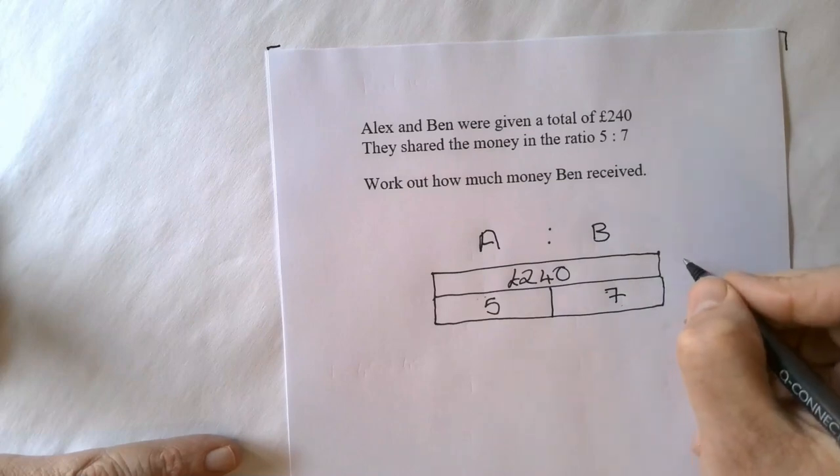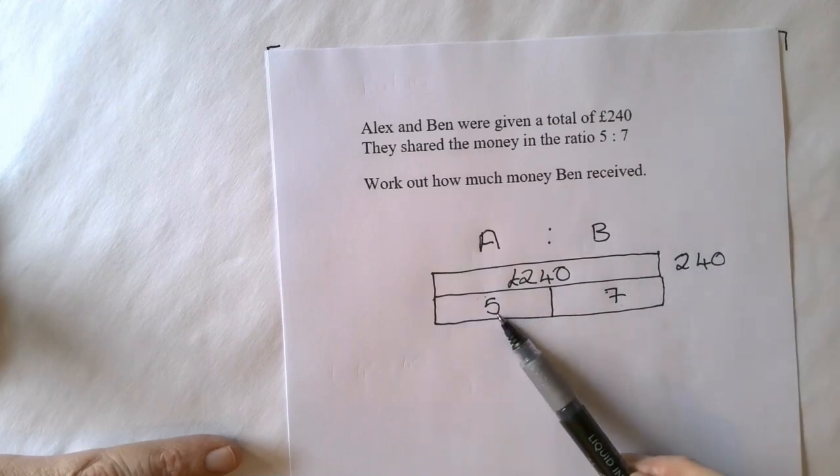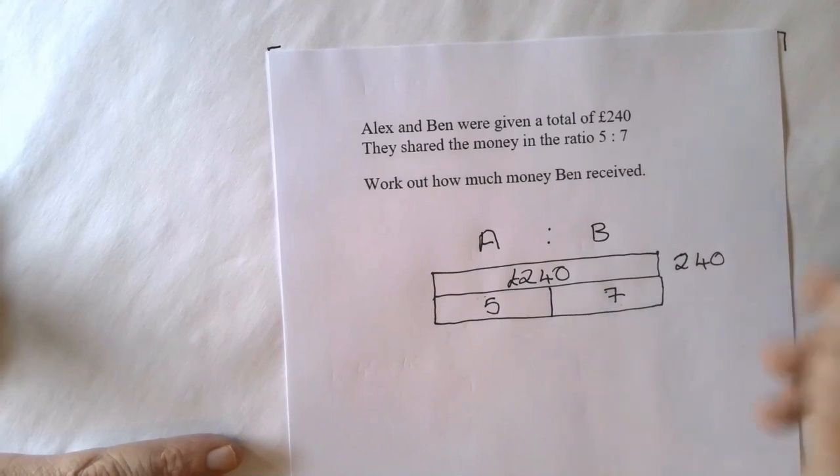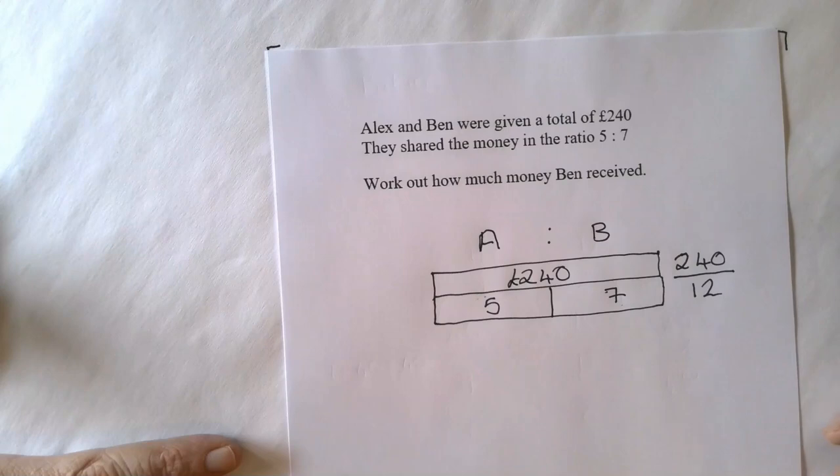Writing it like this way, what you would need to do is you would have to do 240 divided by how many parts is in the ratio. 5 plus 7 equals 12. So 240 divided by 12. This will give you 1 part in the ratio.